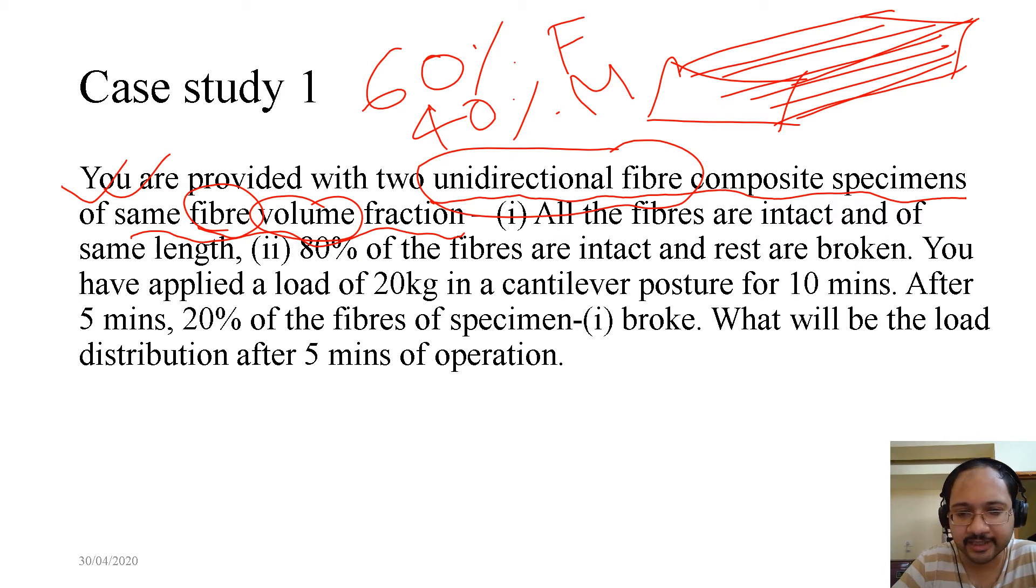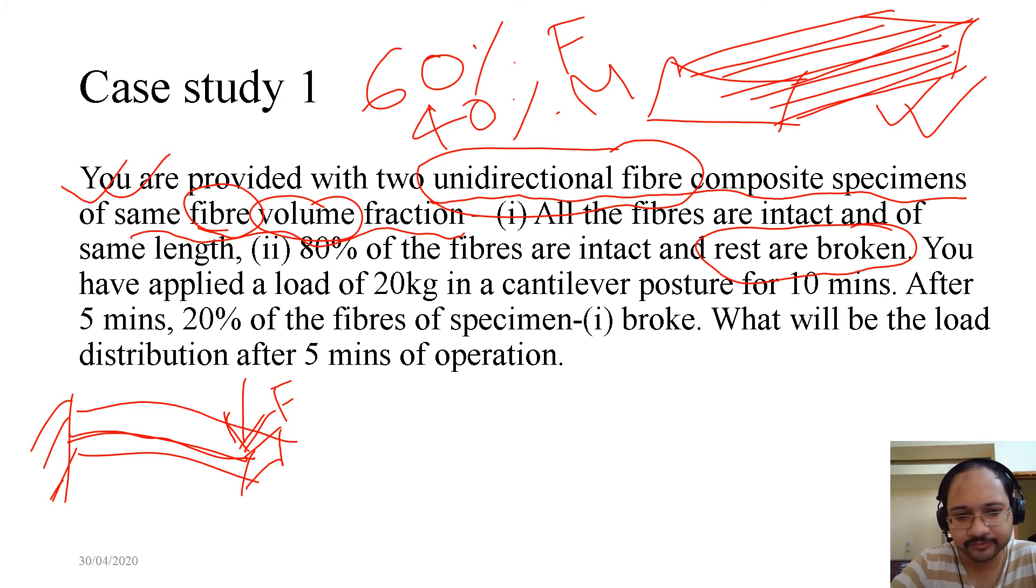Then, for specimen 1, all the fibers are intact and of same length. Makes sense. Specimen 2, 80% of the fibers are intact and rest are broken. So, something is happening here, right? The rest of the fibers are broken. Now, you have applied a load of 20 kilo in a cantilever posture for 10 minutes. What is a cantilever posture? This is the specimen and we are just applying a load. It can be a distributed load, it can be a concentrated load. We are applying a load of 20 kilo for 10 minutes. After 5 minutes, 20% of the fibers of specimen 1 broke. So, that means, after 5 minutes, 80% of the fibers in specimen 1 is intact. What will be the load distribution after 5 minutes of operation?